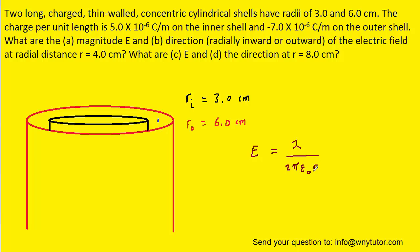Now for part A, the value of R is going to be 4 centimeters. If we look at this picture, we could see that 4 centimeters lies outside of the inner cylindrical shell but inside the outer cylindrical shell. If we were to draw a cylindrically shaped Gaussian surface at a radius of 4 centimeters, we could see that that Gaussian surface would indeed enclose the inner cylindrical shell but not the outer one.